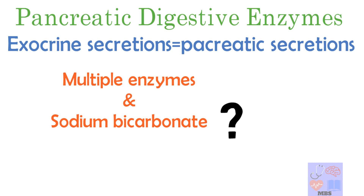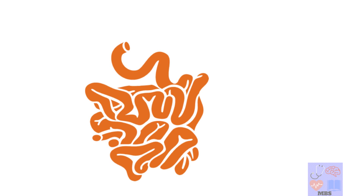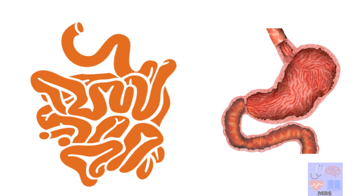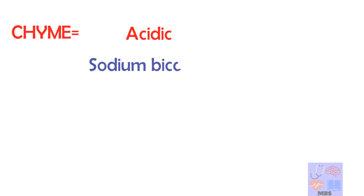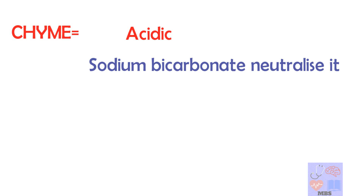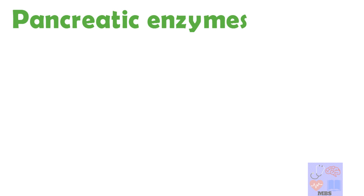The exocrine secretions, known as pancreatic secretions, contain multiple enzymes and sodium bicarbonate. Sodium bicarbonate is present because pancreatic juice is secreted in response to the presence of chyme in the upper portion of the intestine. Chyme is a pulpy, acidic material that comes from the stomach into the small intestine after digestion. Since chyme is acidic, sodium bicarbonate neutralizes it so that the intestines can tolerate the material.